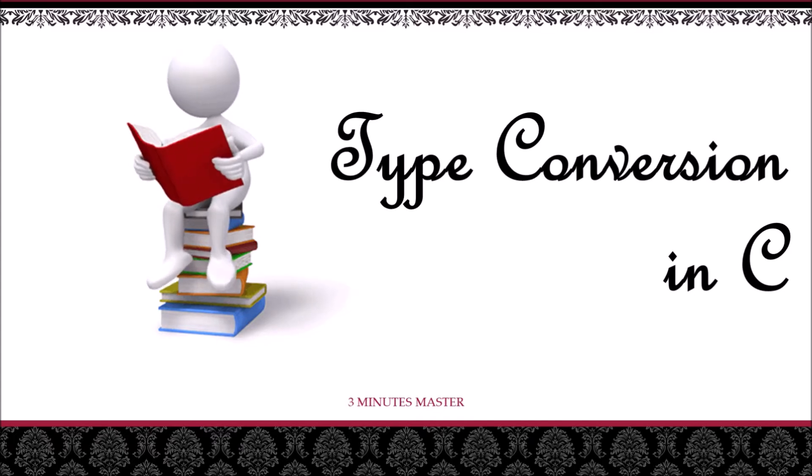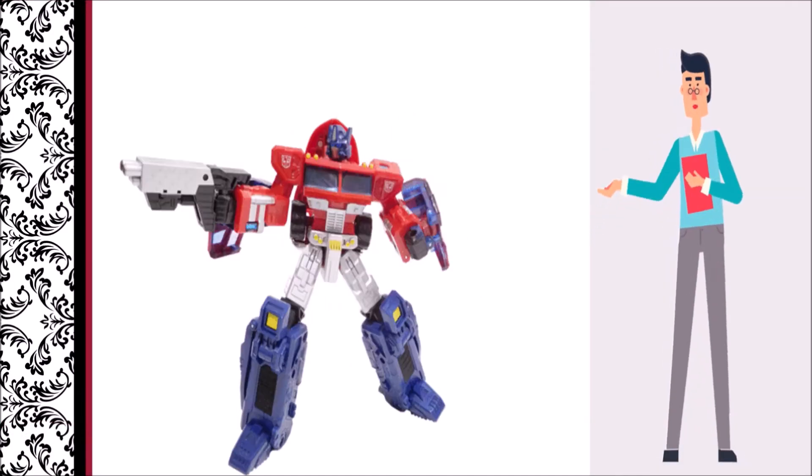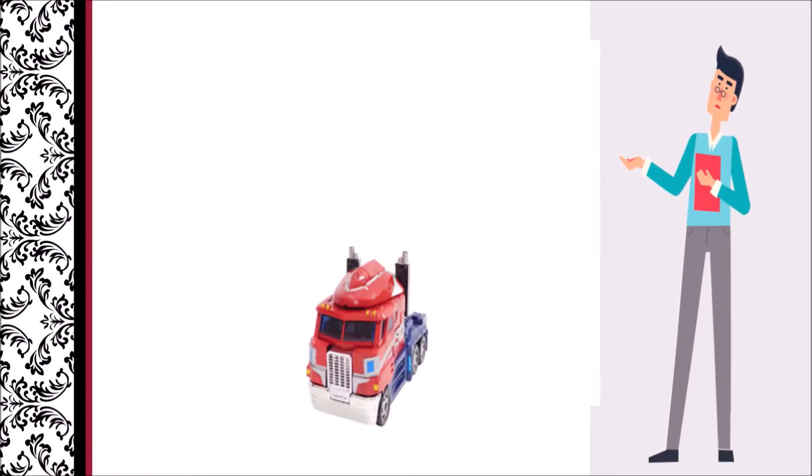In this video, I want to give you a basic idea regarding type conversion in C, so called typecasting. Here you can see a vehicle changing its shape to human look-alike. We can call it as conversion.